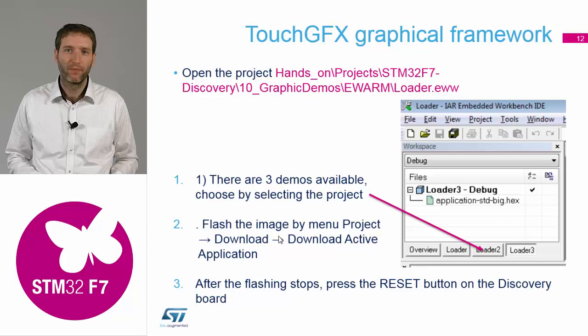When you open this project, you will see the hex file instead of source files. You can choose between the three demos by clicking the loader button, then go to the Download menu and select Download Active Application. The downloading can take up to several minutes because the demo has a lot of non-volatile information stored in quad SPI memory — effectively a few megabytes — so please be patient. When flashing is finished, press the reset button on the discovery board to start the demo. Now I leave you some time to explore the graphical capabilities of the STM32.